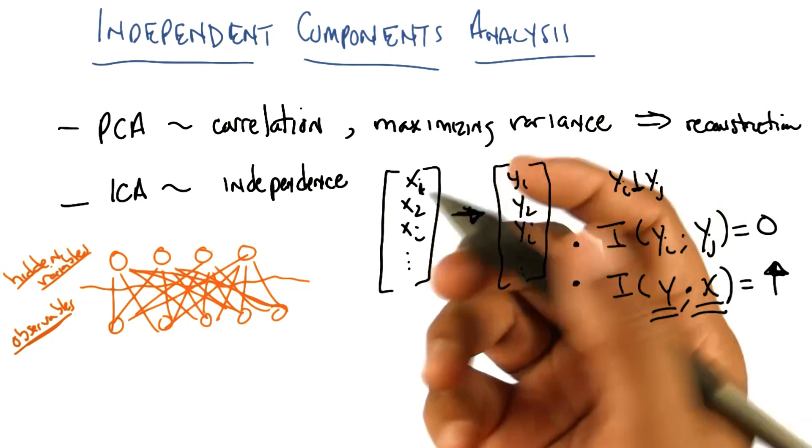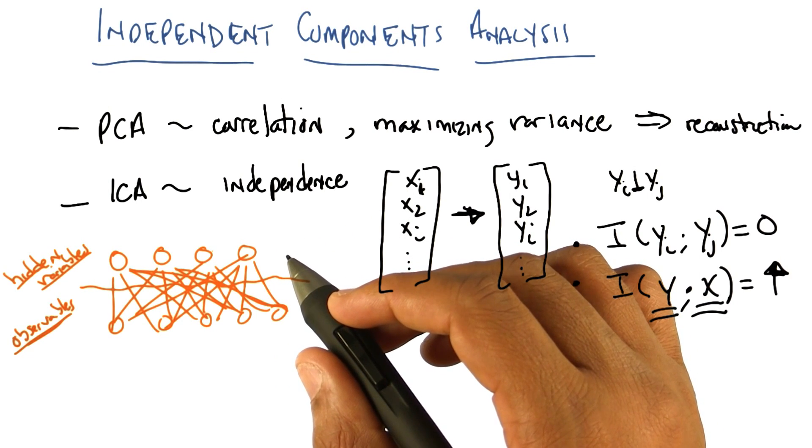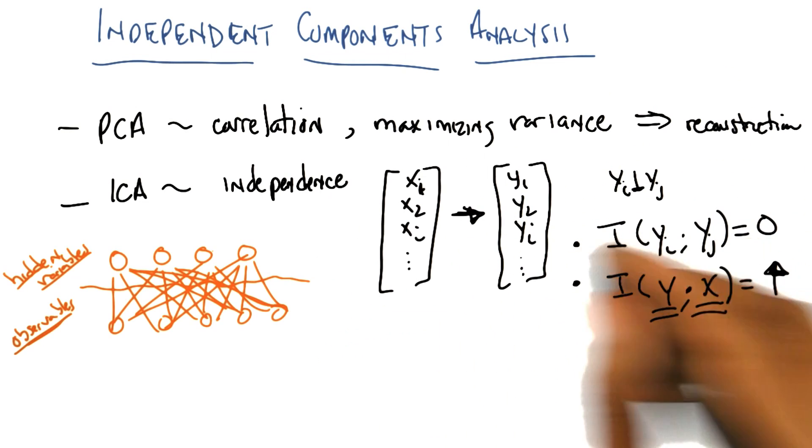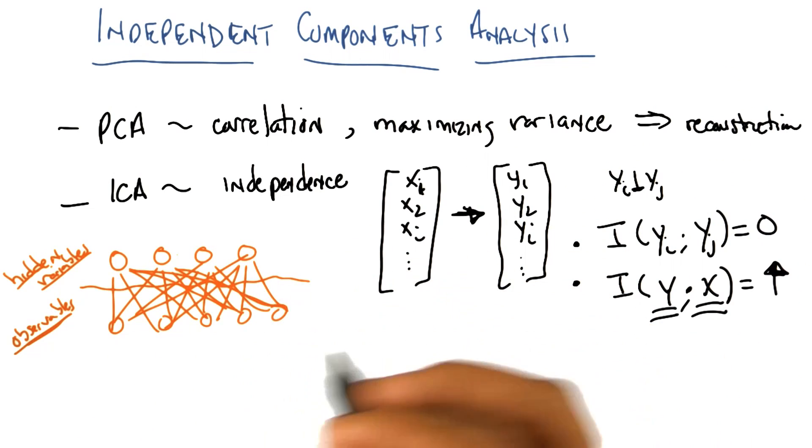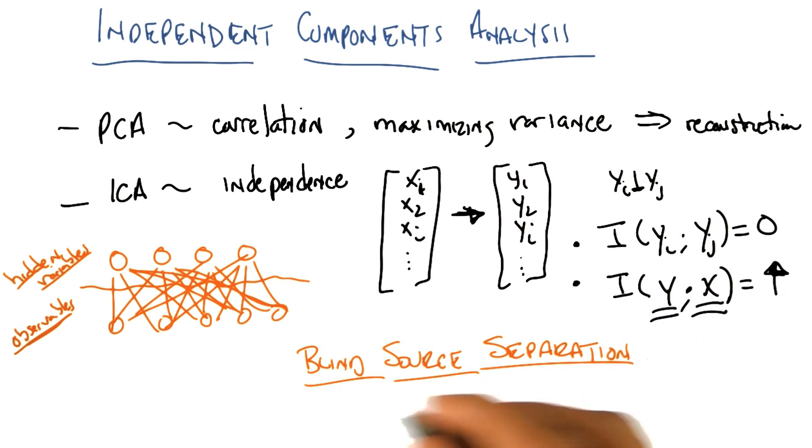So what's a concrete example of that? I'm going to give you a concrete example of that, then I'm going to give you a demo that we found on the web. So, one problem where we know this is true is something called the blind source separation problem. So what's the blind source separation problem? It also has another name, which is the cocktail party problem. Do you remember the cocktail party problem?